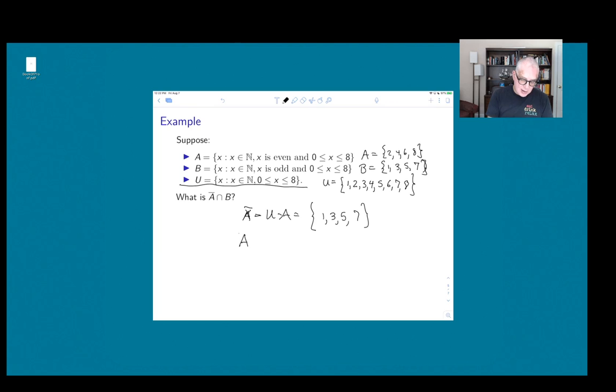And then Ā intersect B are the things that are in both Ā and B. But it turns out Ā is B, so everything that's in Ā is also in B. So it's again 1, 3, 5, and 7. So in this case, we have that Ā intersect B actually equals B.